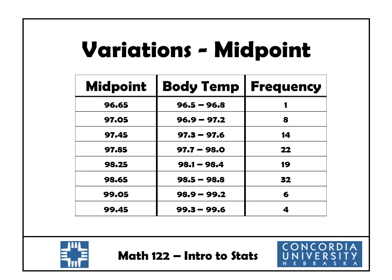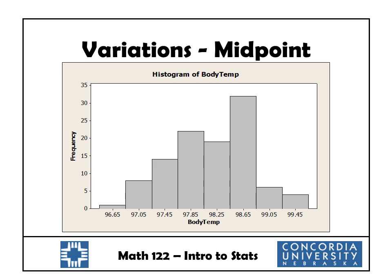There are a couple of variations on the basic frequency distribution. The first is what we call a midpoint frequency distribution. One way to label our classes is by the midpoint of the subintervals rather than the lower and upper class limits. For example, the first midpoint is 96.65 — halfway between 96.5 and 96.8. That first and last column would constitute a midpoint frequency distribution. A histogram based on that midpoint distribution would look very similar to our first histogram; the only difference is how we label the columns — with midpoints instead of left and right endpoints.